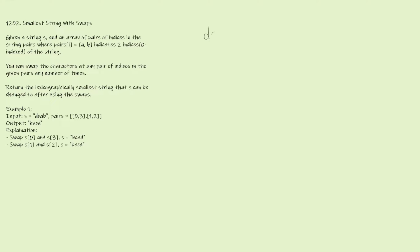For example, if we're given the string 'dcab' — zero-indexed as 0, 1, 2, 3 — and the pairs given are (0,3) and (1,2), then we can swap d and b, and also swap c and a. Since b is smaller than d we swap positions 0 and 3, and since a is smaller than c we swap positions 1 and 2. We can't swap anymore, so this ends up being the smallest string we can return.